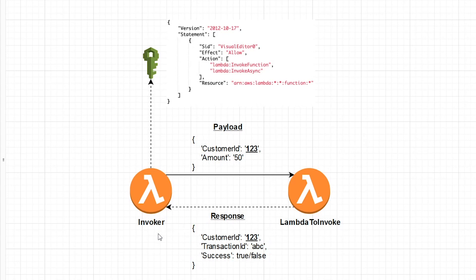So here we have two Lambda functions. We have an invoker Lambda function, which is going to be the one that's calling the other Lambda function. And then we have the other Lambda function, which is the one that is going to be called — I'm calling that the Lambda to invoke. So two Lambda functions: the caller and the callee.